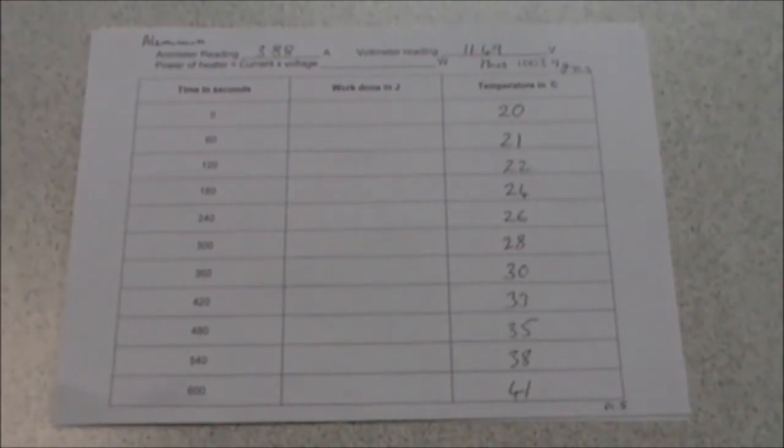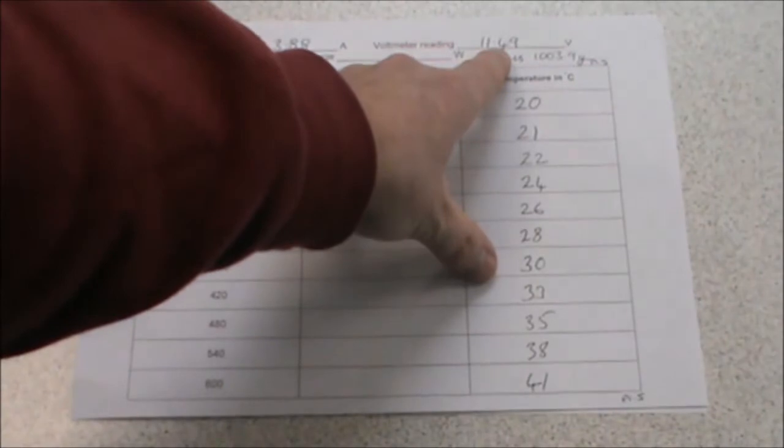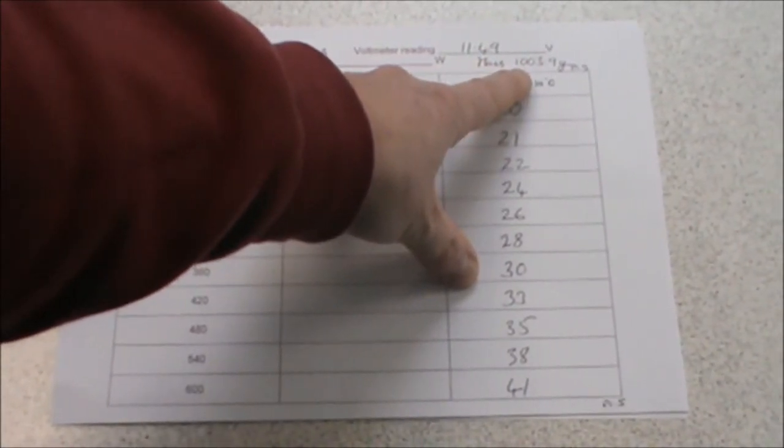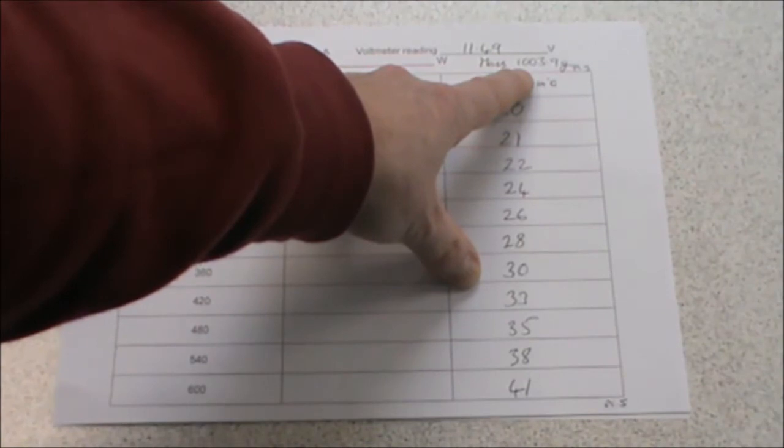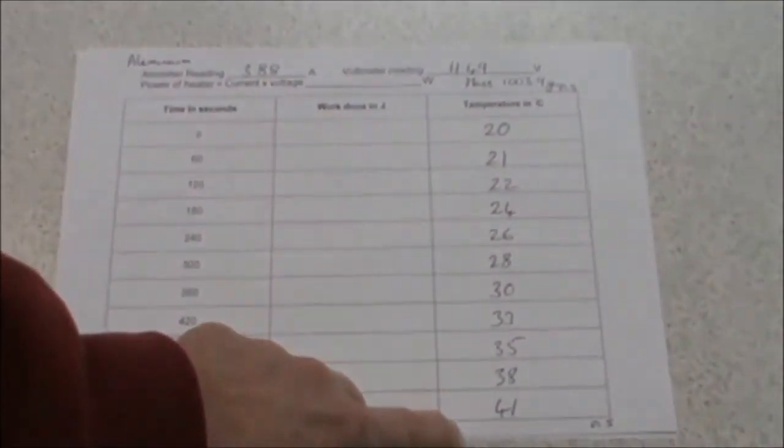The final set of results that you require are for aluminium. The ammeter reading was 3.88 amps, the voltmeter reading 11.49 volts, and the mass of 1003.9 grams. These are the temperature readings that you need to record in your results table.